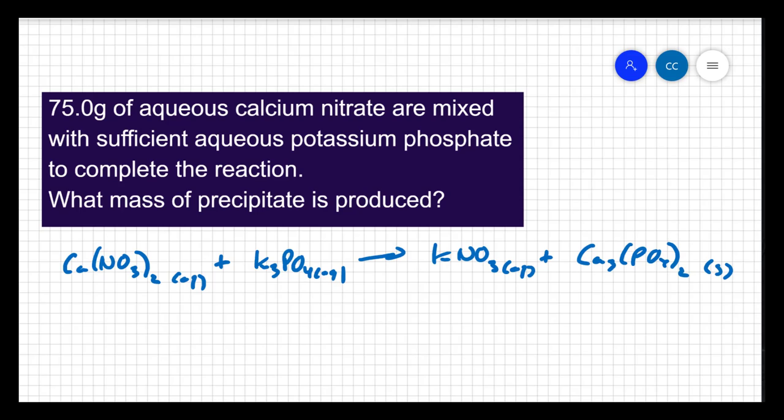So I look at my calcium phosphate. I have three calciums on the product side, so I'll need three calciums on the reactant side. I have two phosphates on the product side, so I will need two phosphates on the reactant side. And then, in order to balance out the potassium and the nitrates, I'm going to put a six here. There is my balanced equation.